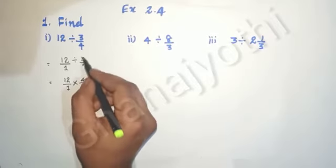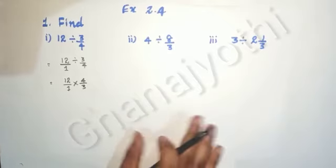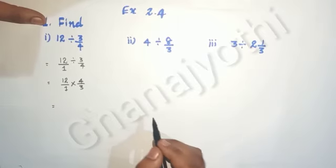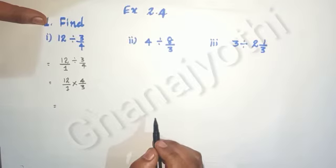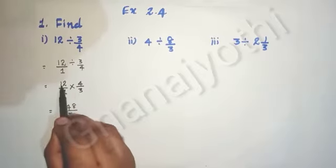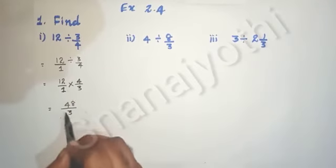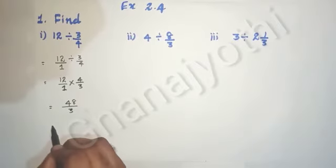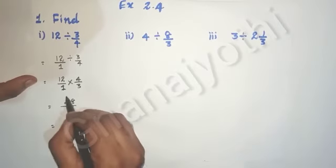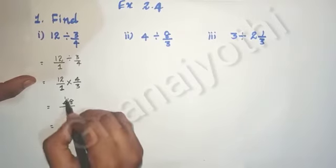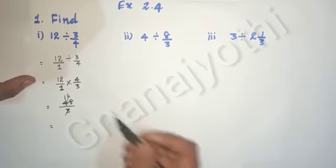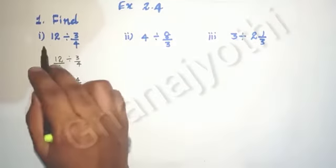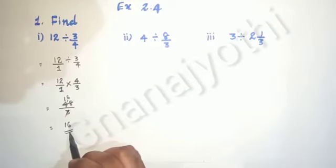This is what we call the reciprocal. Now, directly we multiply numerator into numerator, denominator into denominator. 12 × 4 = 48 upon 1 × 3 = 3. This can be simplified: 48 ÷ 3 = 16. Therefore, when we divide 12 divided by 3/4, we get 16.